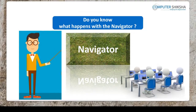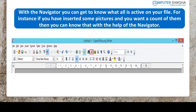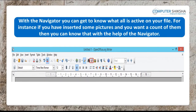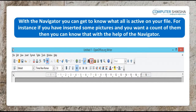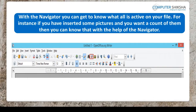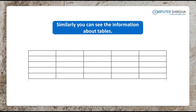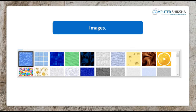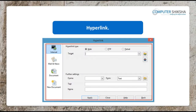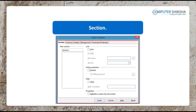Do you know what happens with the navigator? With the navigator you can get to know what all is active on your file. For instance, if you have inserted some pictures and you want a count of them, you can know that with the help of the navigator. Similarly you can see information about tables, images, hyperlinks, sections, and get a count of these.